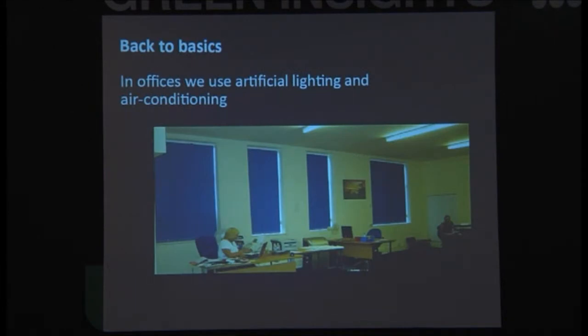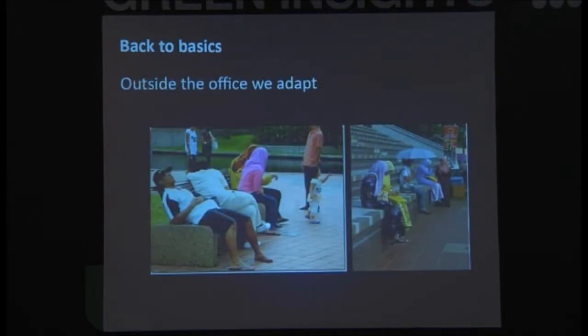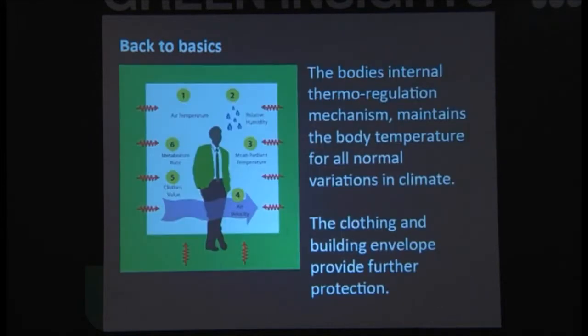So in offices we use artificial lighting and air conditioning. Yet we go outside and we adapt. So why can't we adapt in buildings? So our body has a thermal regulation system. We can actually maintain a comfortable body temperature. So if we can actually design a building around those parameters, then we can reduce the energy usage.